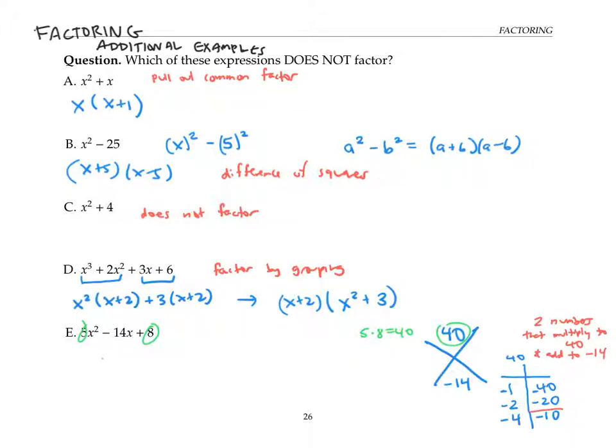So negative four plus negative 10 is negative 14. Negative four times negative 10 is positive 40. We've got it.